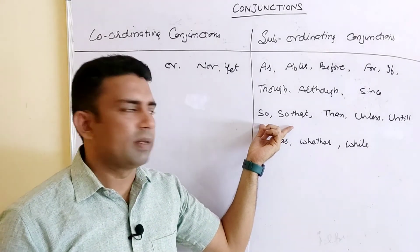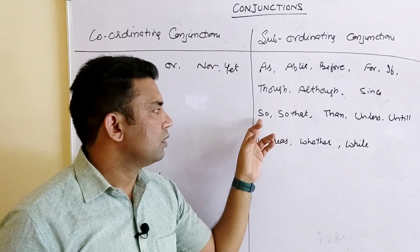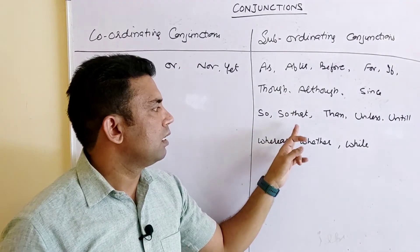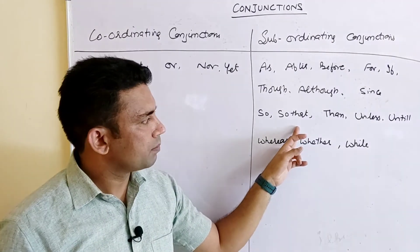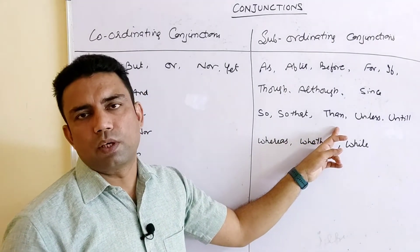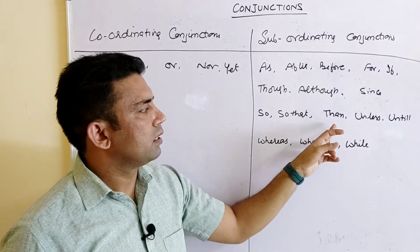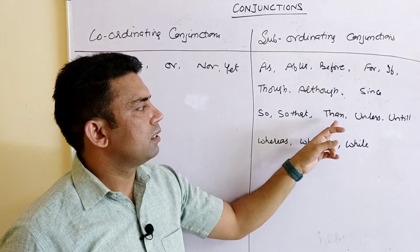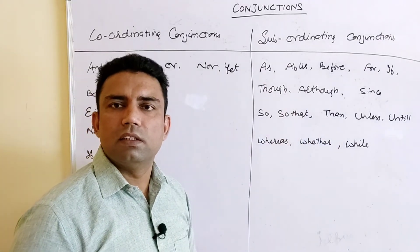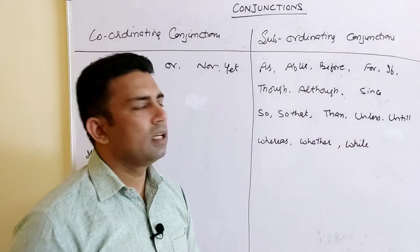'So' and 'so that' are both used for consequences: 'He studied hard so he got good marks,' 'he studied hard so that he can come first.' 'Than' is used to compare: 'Rahul is smarter than Rohit.'